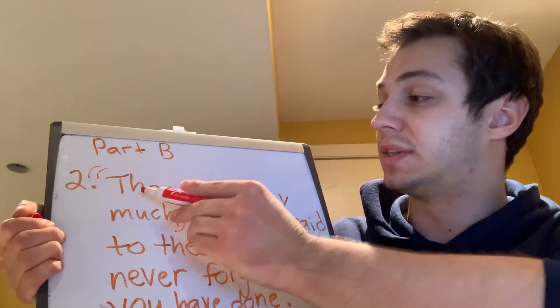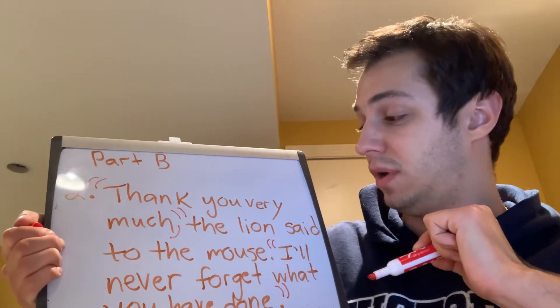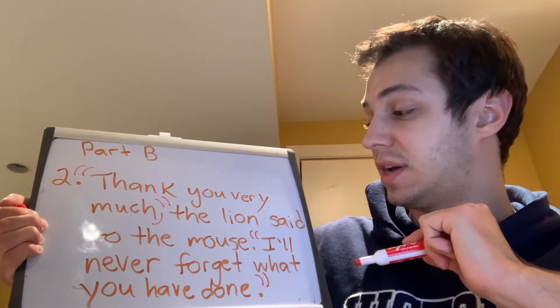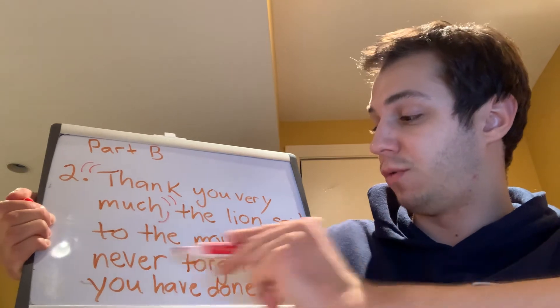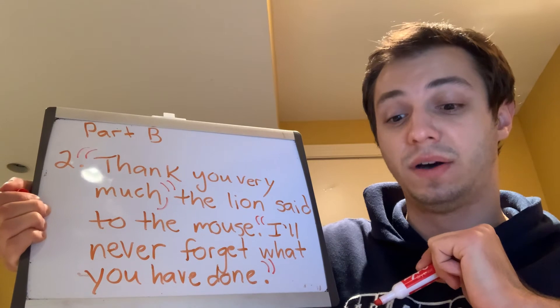So in the first sentence, the exact words were "thank you very much" and I needed to include a comma. In the second sentence, the exact words spoken were "I'll never forget what you have done", and it already has the period. Now, looking at the first example and the example we completed together, work on numbers three, four, and five — add in your quotation marks and commas where needed. Pause the video now, and I'll meet you in Part C.